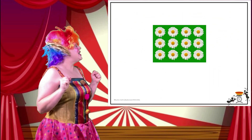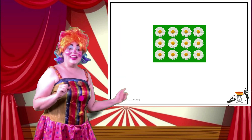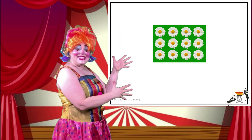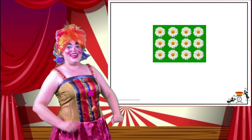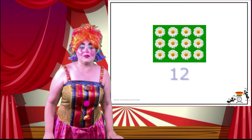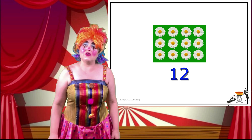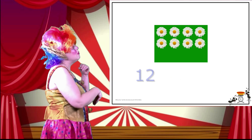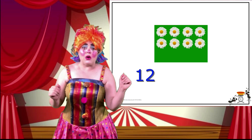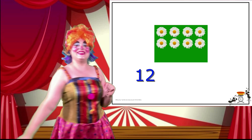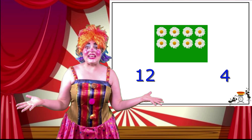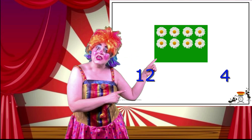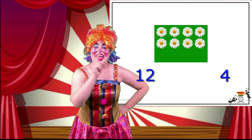I love doing that! Look! We have another plot with daisies! How many daisies are there on the plant? That's right! There are twelve! Now, some of the daisies are going to fall down! How many daisies fell down? Very good! Four daisies fell down! So, how many daisies are left on the plant? Very good! Eight!